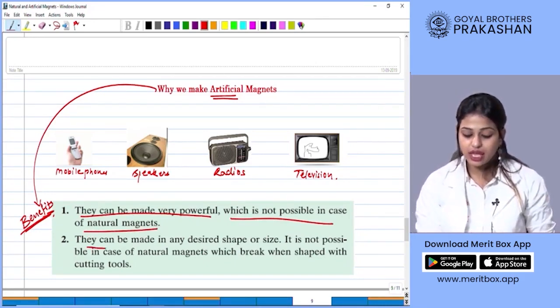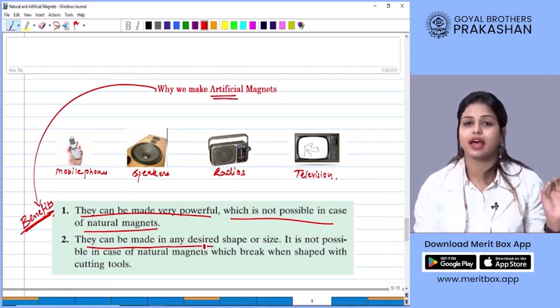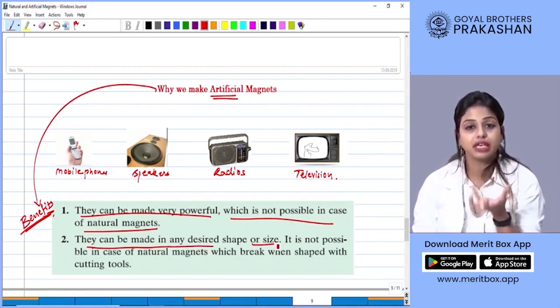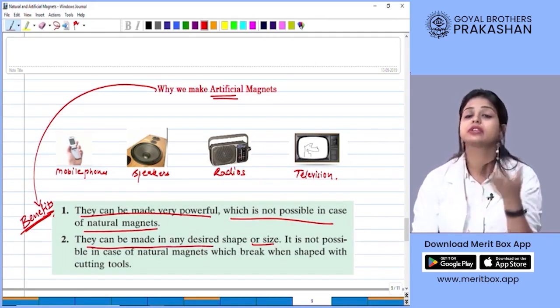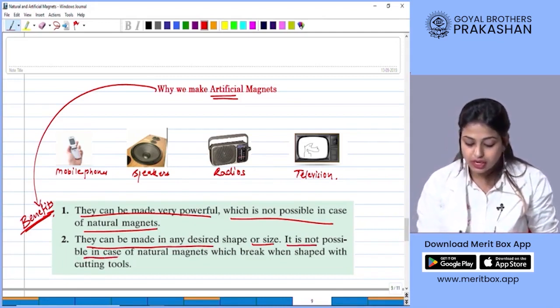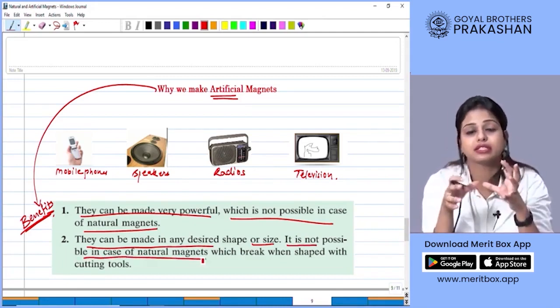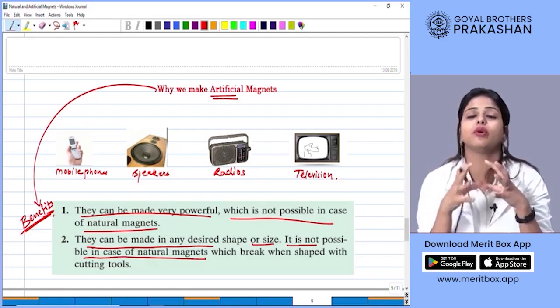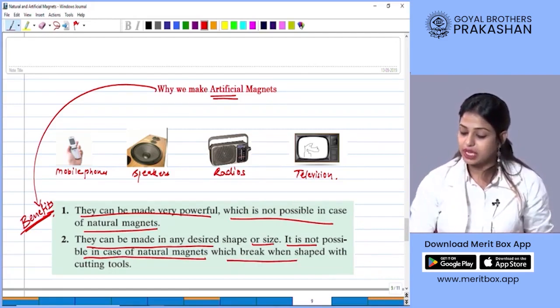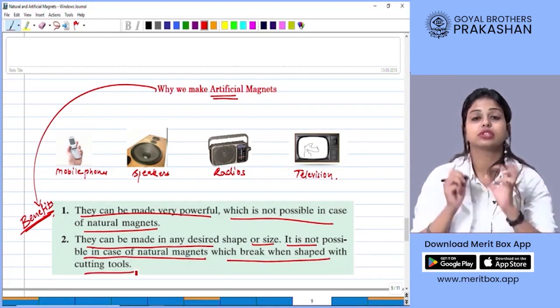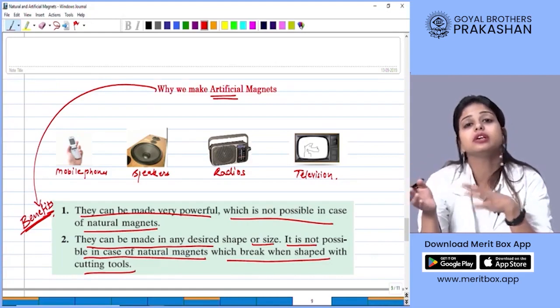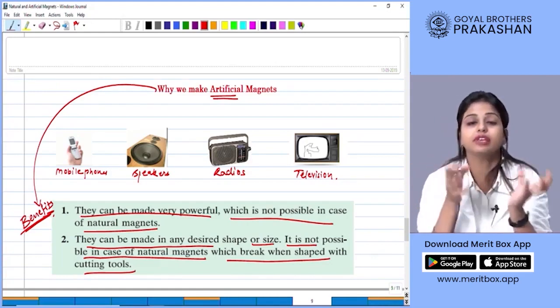The second point is they can be made in any desired shape or size. Now this is what we had already seen. When we are making a magnet, it is on us in which shape we require the magnet. It is not possible in case of natural magnets. As in case of magnetite, we know it occurs in the shape of a random stone which breaks when shaped with cutting tools. Now this is a drawback of natural magnets. If we try to shape them in a particular manner, they might break. They are very fragile.